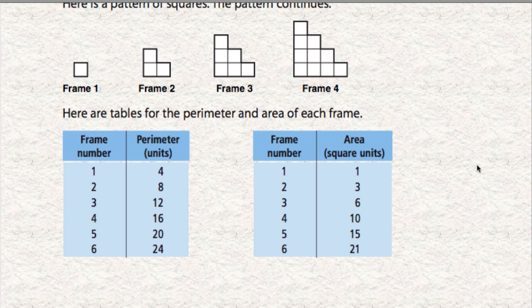So the very first one here, let's talk about perimeter, just as an example. There's a pattern of squares. Perimeter is how many units around the outside. So in the first frame here, you can see that around the outside, there would be one, two, three, four units.